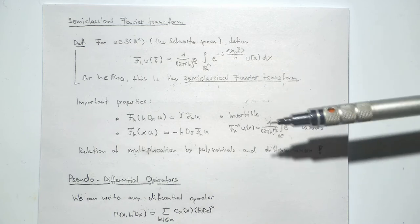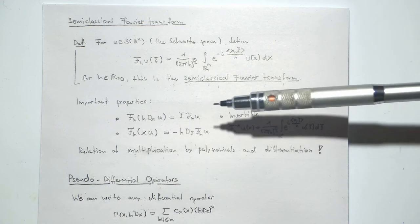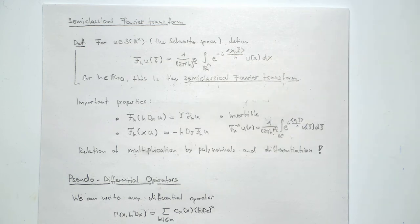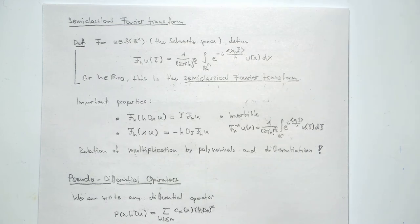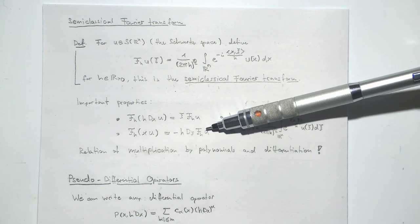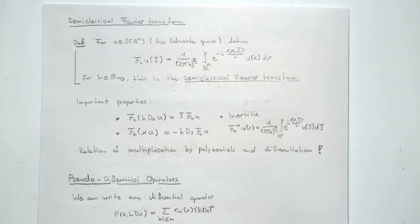The properties we want to use are the following. If we take a function u, differentiate it with respect to x using H·d_x, and then take the Fourier transform, this is the same as Fourier transforming first and then multiplying by Xi. Conversely, if we first multiply by x and then Fourier transform, it's the same as Fourier transforming first and then differentiating with respect to Xi. This gives us a correspondence: raising Xi to the power n corresponds to n-fold differentiation, and differentiating n times gives Xi to the n.